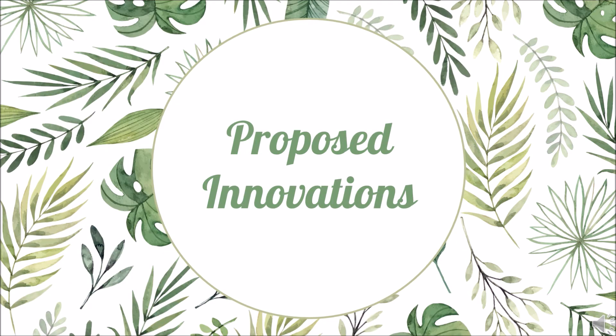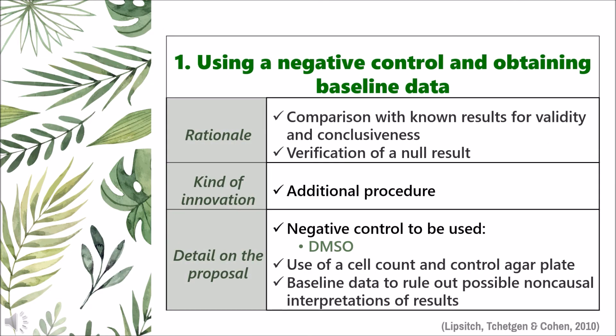I am proposing some innovations to address the limitations of the study and improve efficiency of the model used. First is using a negative control and obtaining baseline data. The rationale is to compare results of new test samples to known results for validity and conclusiveness, and to verify that the negative control truly produces a null result. Only a positive control using standard commercial drugs was used in the study. A negative control using the solvent should have been included to ensure that observed inhibitions of microbial growth can be solely attributed to the test samples and not to other variables.